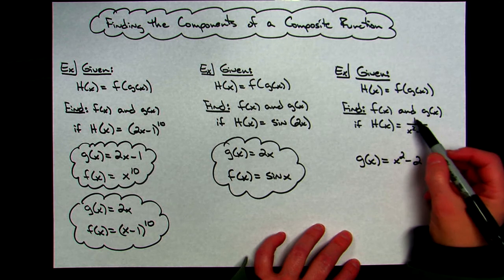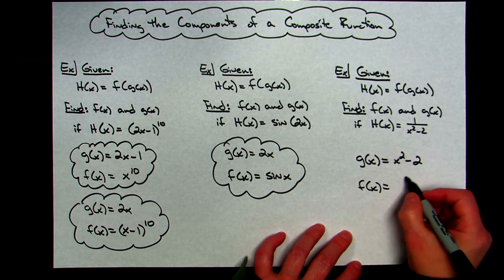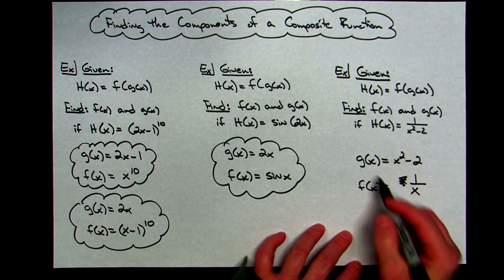then the outside function would be 1 being divided by whatever that is. So my f of x or the outside function would be 1 over x.